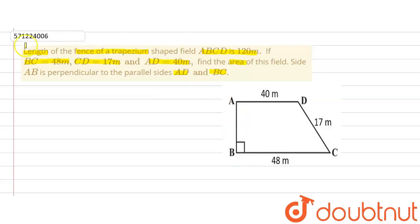So let's write down what is given in this question. We are given length of BC is equal to 48 meter, length of CD is equal to 17 meter, length of AD is equal to 40 meter.